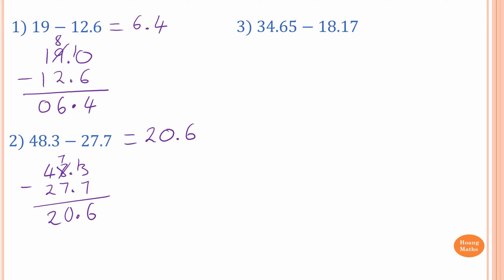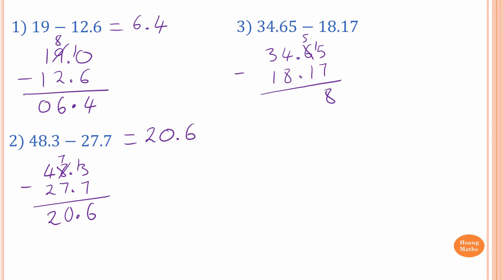Question number 3: 34.65 minus 18.17. So I just write this down. Now 5 cannot take away 7, so you borrow 1 from 6 — that gives me 5, and 5 becomes 15. 10 take away 7 is 3, and 5 is 8. Or start from 7 and go up to 15 using your fingers: 8, 9, 10, 11, 12, 13, 14, 15 — it's 8. Then 5 take away 1 is 4. Write it down.